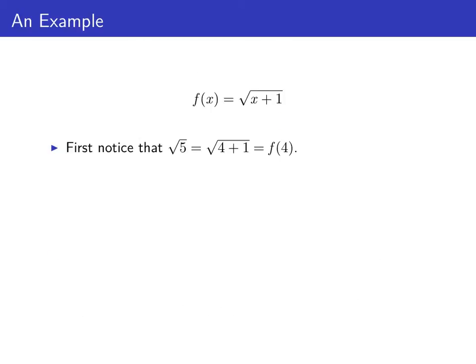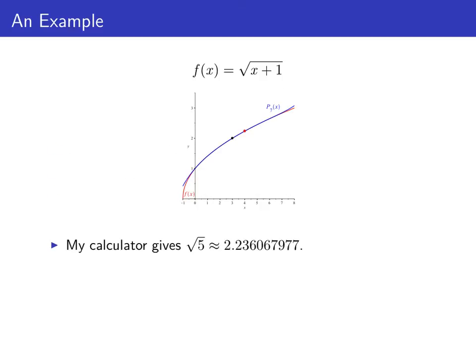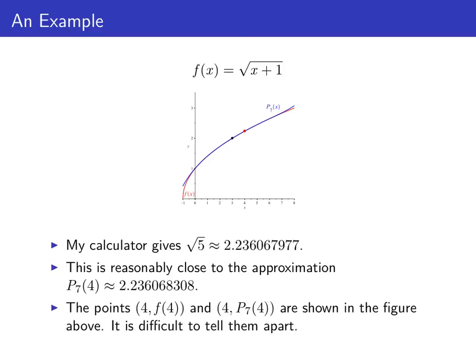The square root of five is the square root of four plus one, which is just f of four. We can approximate f of four with p sub seven evaluated at four. Using our formula for p sub seven and evaluating at x equals four, we get p sub seven of four as a fraction with approximate value two point two three six. Using a calculator to approximate the square root of five also gives about two point two three six, so p sub seven of four is a pretty good approximation to the square root of five.